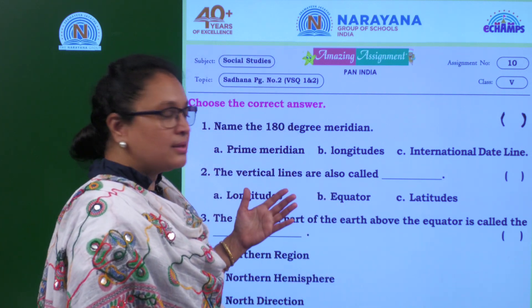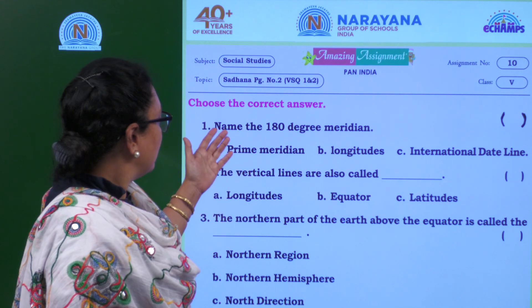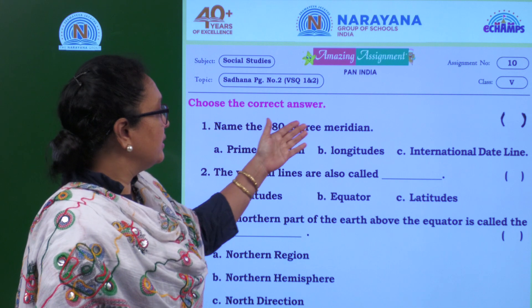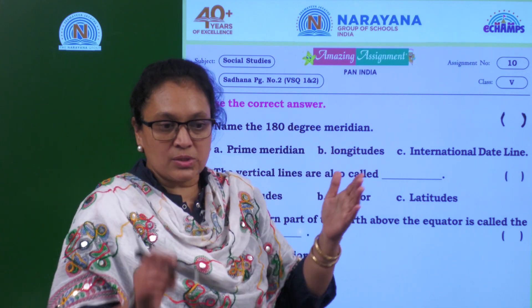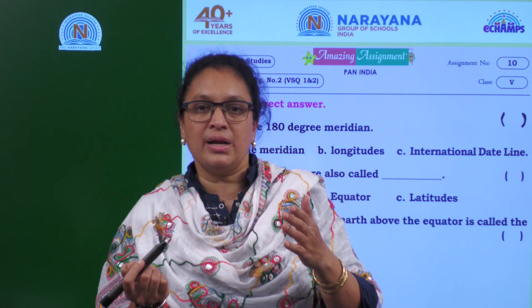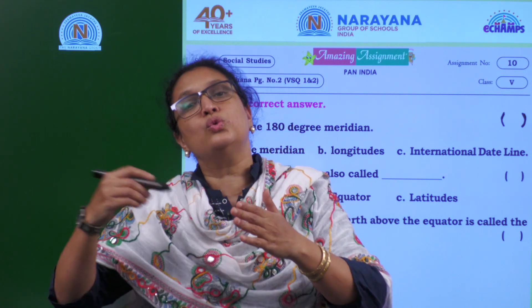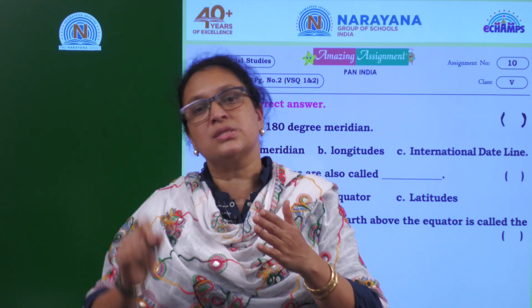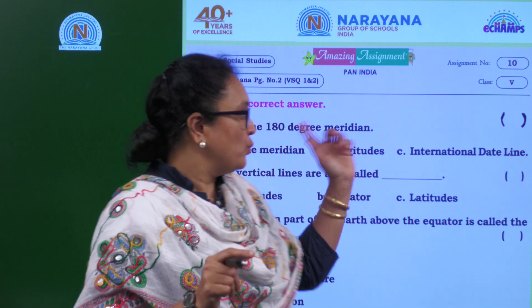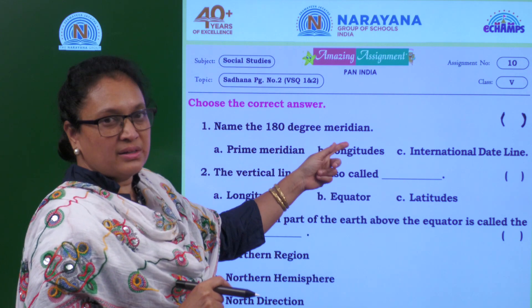Let's begin the assignment. The first one: name the 180-degree meridian. It's not zero degrees — zero degree is the prime meridian. The 180-degree meridian is where a new day begins, and you can find it at Attu Island, which is in the USA.